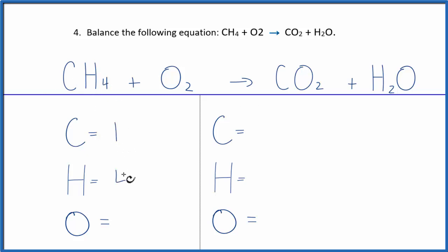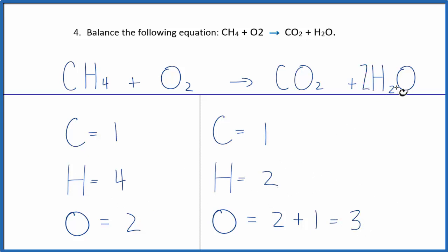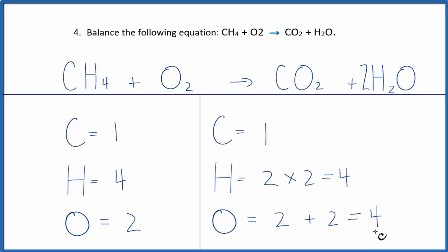This equation is a little more complicated but not too bad. On the reactant side we have one carbon, four hydrogens, and two oxygens. On the product side we have one carbon, two hydrogens, and three oxygens total. To balance the hydrogens, change the coefficient to two, giving 2×2=4 hydrogens. Then to balance the oxygens, we change the coefficient so that 2×2=4 oxygens. Now everything is the same on each side — we're obeying the law of conservation of mass.